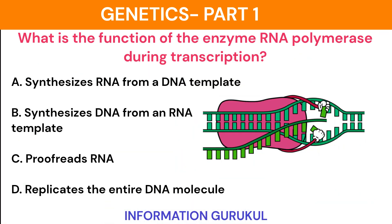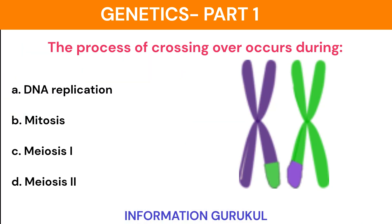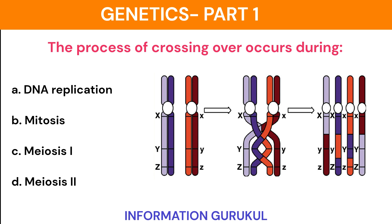What is the function of the enzyme RNA polymerase during transcription? It synthesizes RNA from a DNA template. The process of crossing over occurs during meiosis 1.